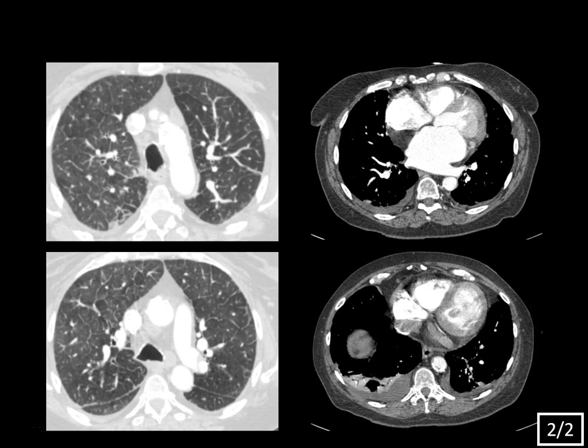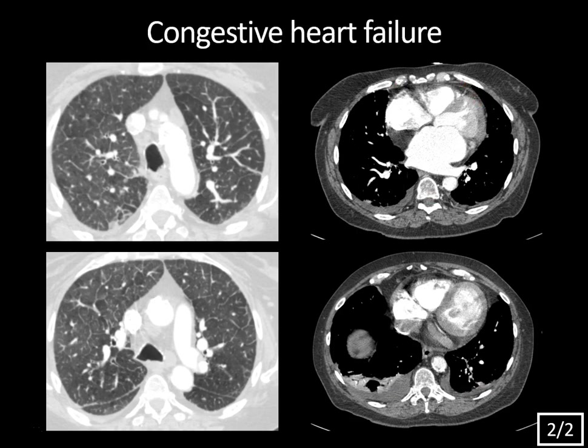The soft tissue windows show bilateral pleural effusions, right greater than left, as well as mild cardiomegaly. So combining these findings, this is congestive heart failure. CHF is often a straightforward diagnosis on chest x-ray, but on chest CT, if you're not thinking about it, you may go down the path of thinking this is some obscure acute or chronic interstitial lung disease. The interlobular septal thickening is the pulmonary interstitial edema, the hazy opacity is the developing alveolar edema, and then we have the effusions and cardiomegaly.